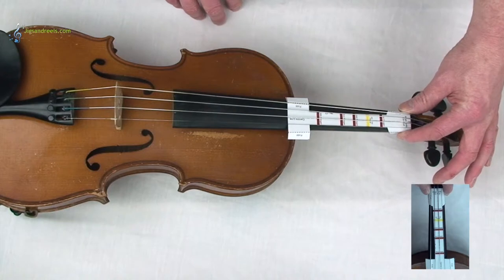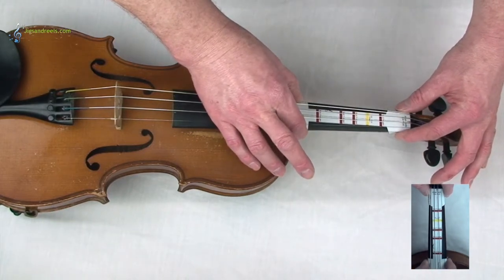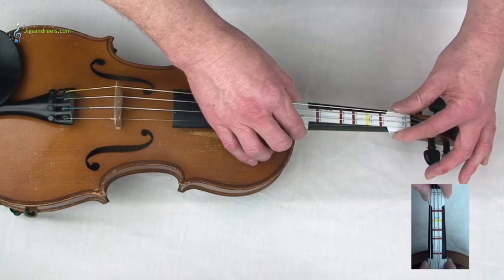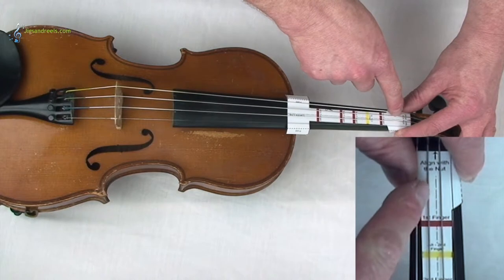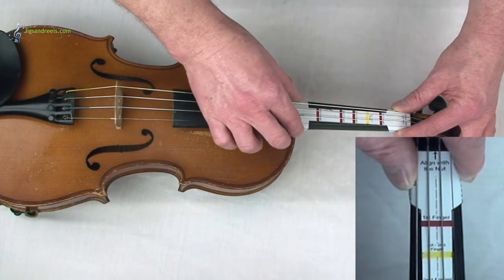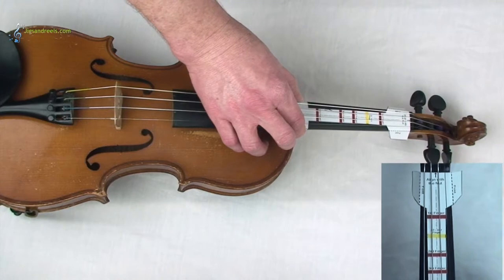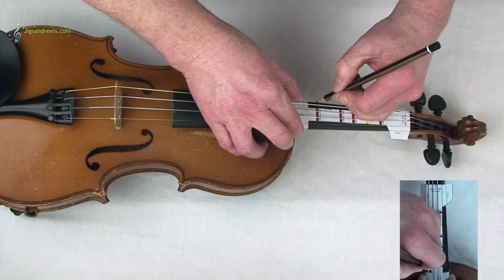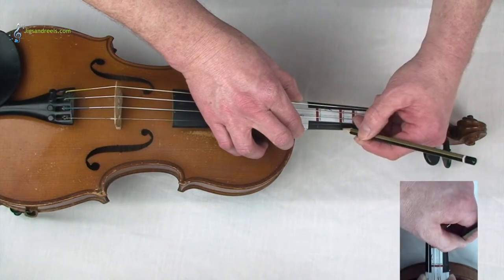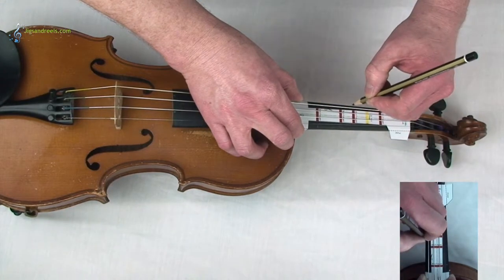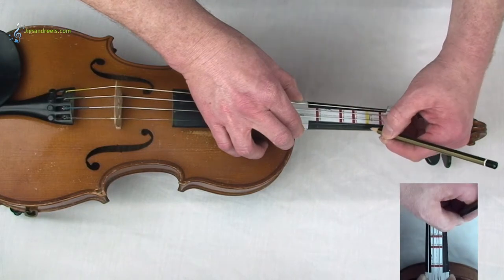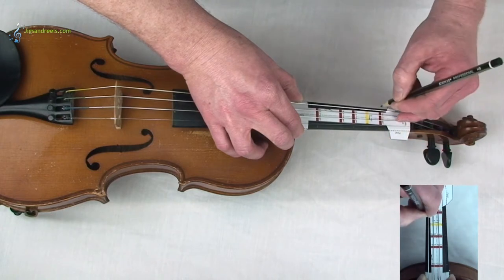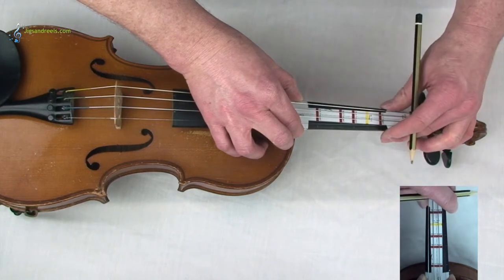If I hold it in position with the folds over the edge of the fingerboard, you can tape this in position or just hold it. This center line needs to be in the middle so we know we've got it straight. Now I'll get a pencil and mark either side quite carefully in the middle of these lines. Try and be as accurate as you can.